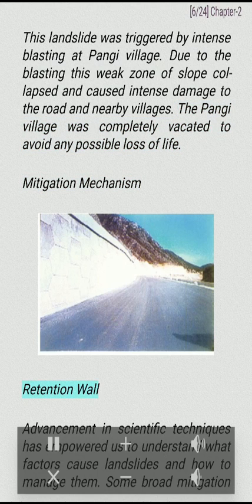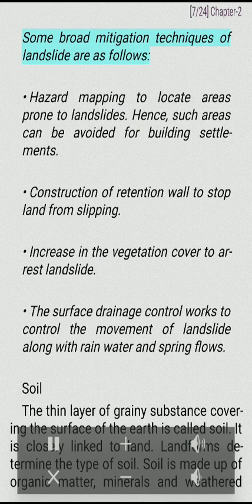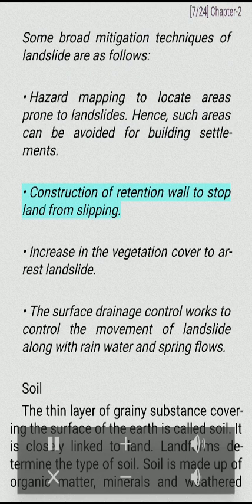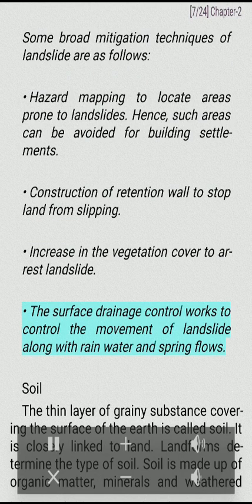Mitigation mechanism — some broad mitigation techniques of landslide are as follows: Hazard mapping to locate areas prone to landslides, so such areas can be avoided for building settlements. Construction of retention walls to stop land from slipping. Increase in vegetation cover to arrest landslides. Surface drainage control works to control the movement of landslide along with rainwater and spring flows.